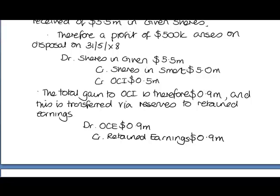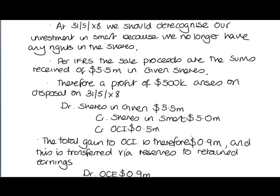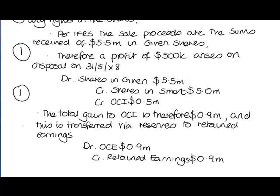Again, I think there's a lot there — it's a busy question for four marks — but if you break it down into a series of smaller parts: we've got a de-recognition, we've got a profit of 500k, we show where that profit appears, and we do the transfer. You can see that's how the four marks are likely being allocated. Whilst there's a lot to do, it's a bite-sized chunk which I think you can manage.